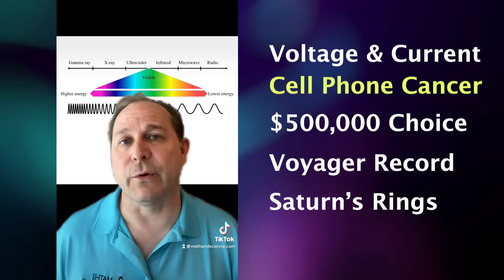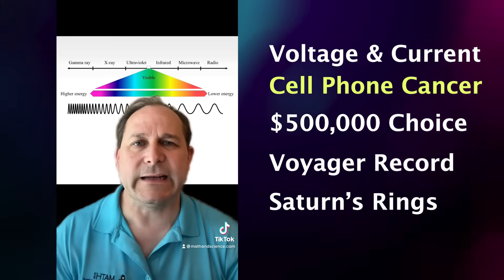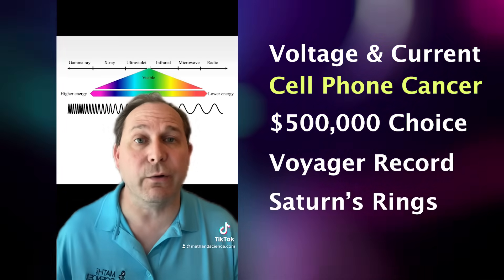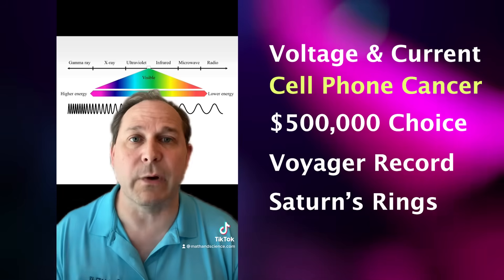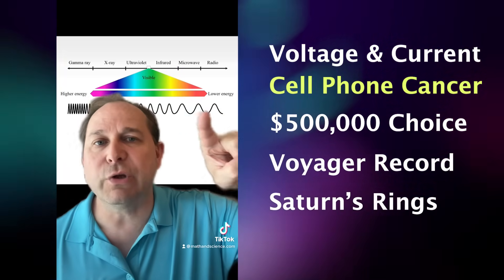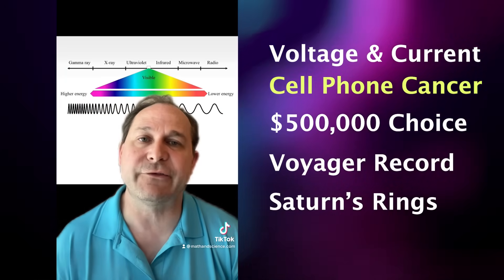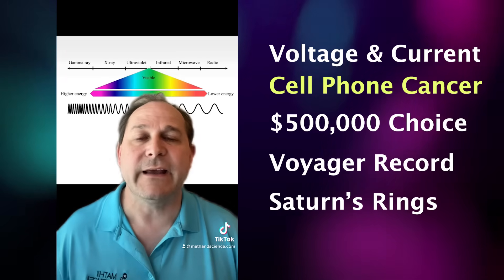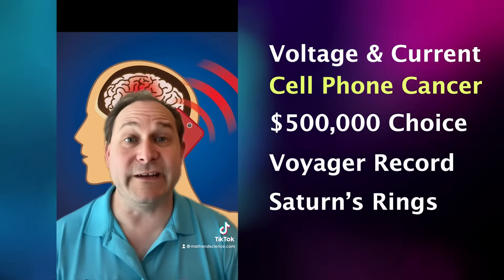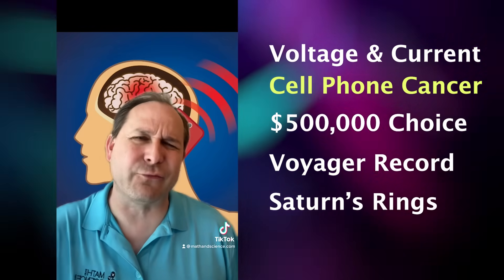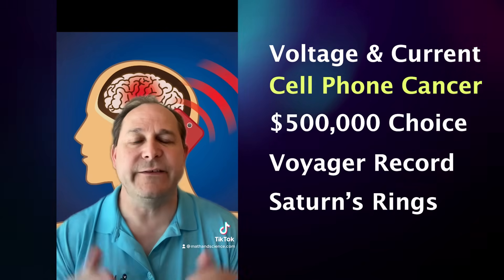About 10 electron volts is the threshold to start to do damage. Ultraviolet light at the tail end of its range is just barely enough to start to damage DNA — that's why UV requires us to wear sunblock, or you could eventually get skin cancer. But all frequencies below UV are too low. The photon energies below ultraviolet are way below the 10 electron volt threshold, so the radiation from your cell phone is called non-ionizing radiation. The photons from your cell phone at their maximum are only 0.0001 electron volts, so it cannot cause cancer.